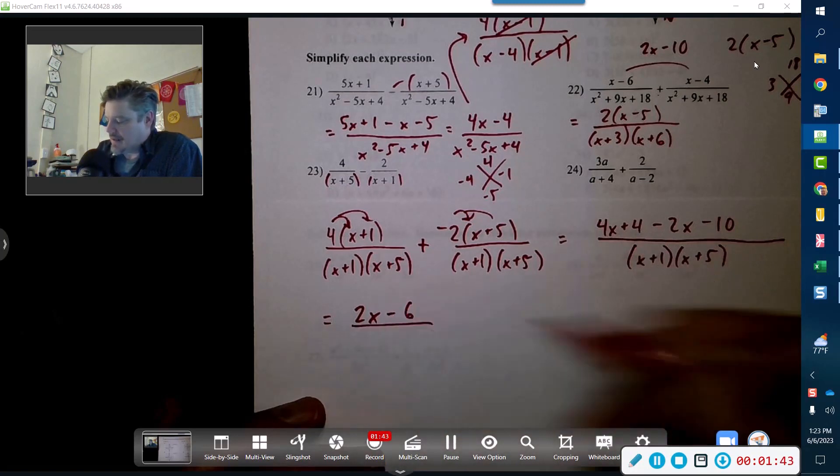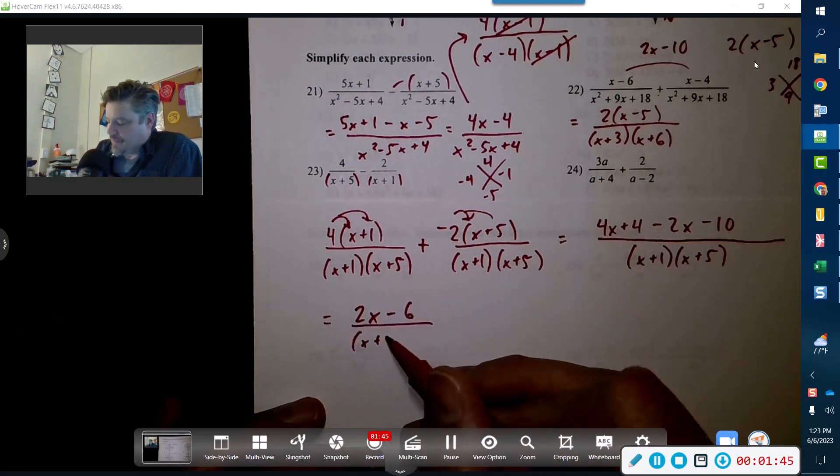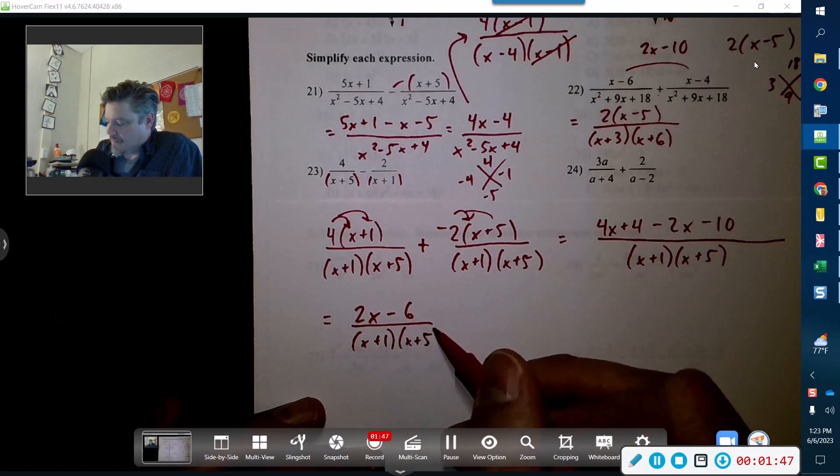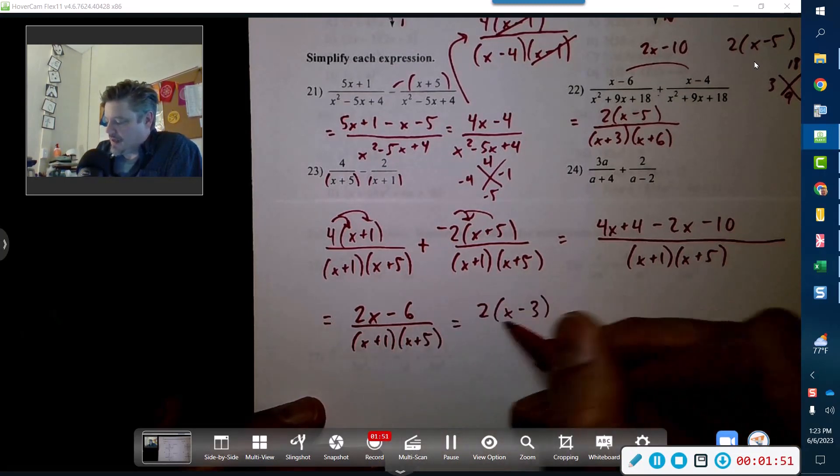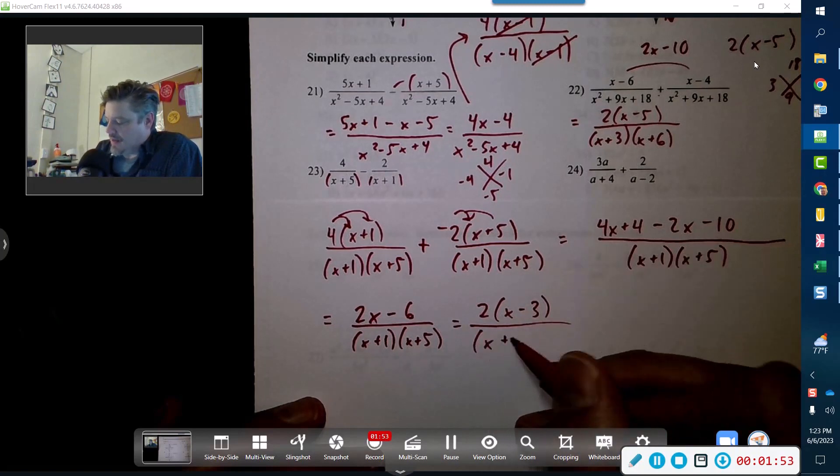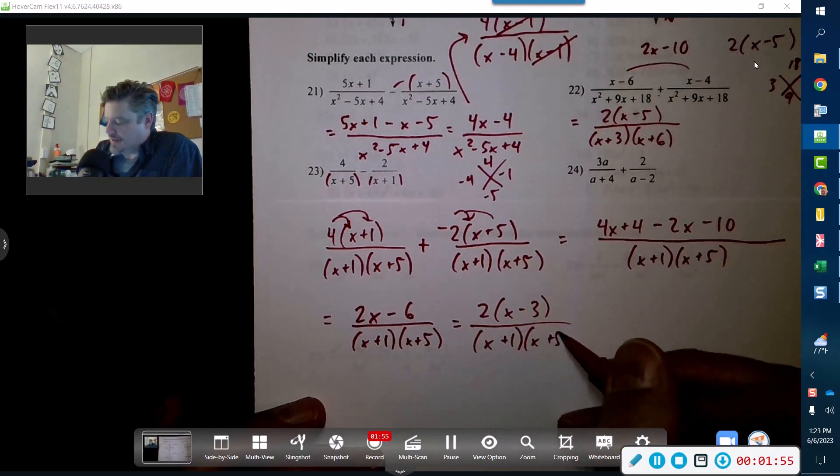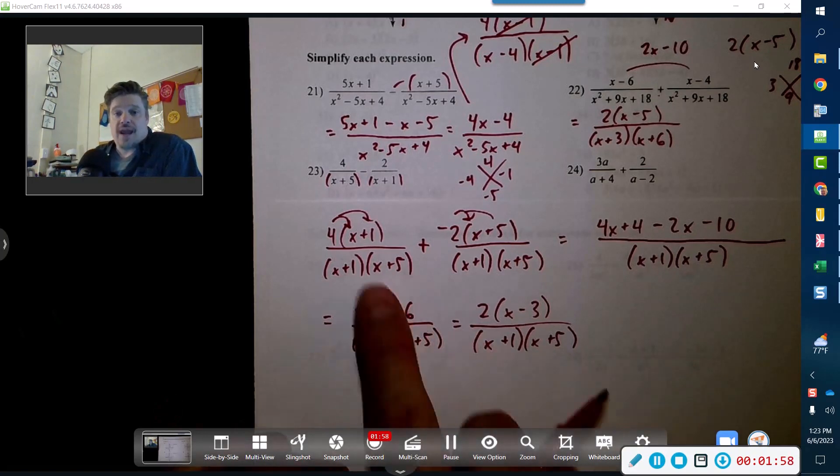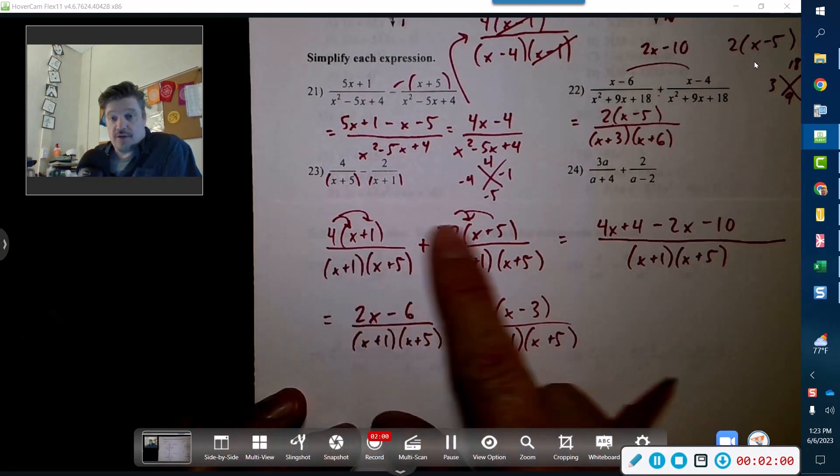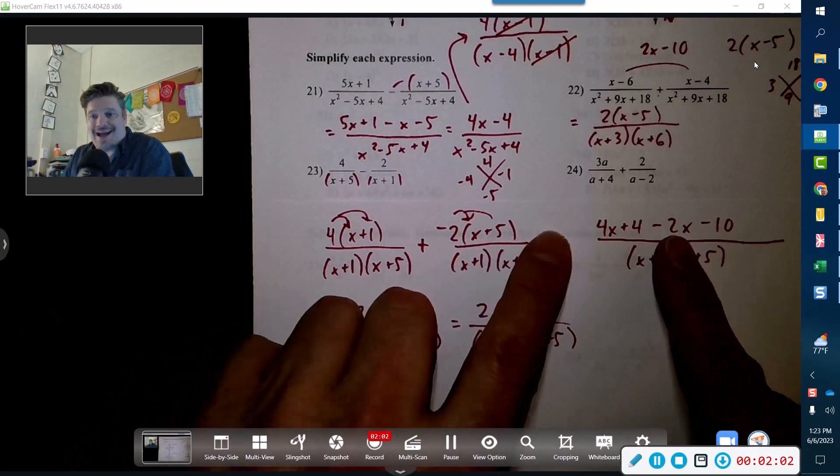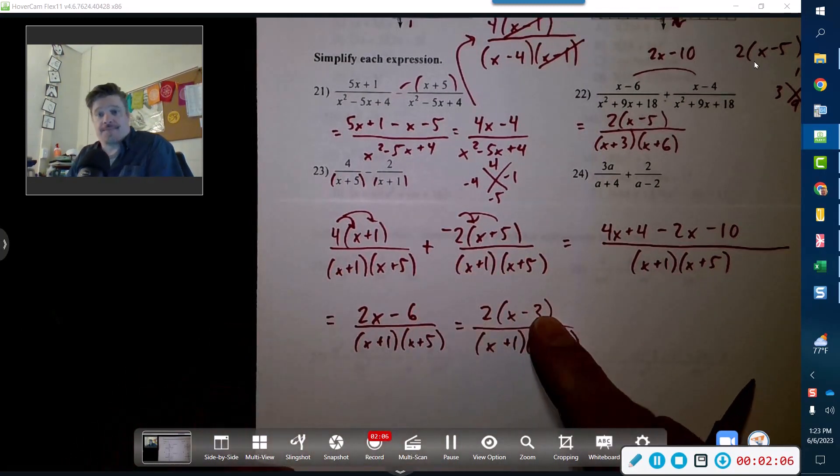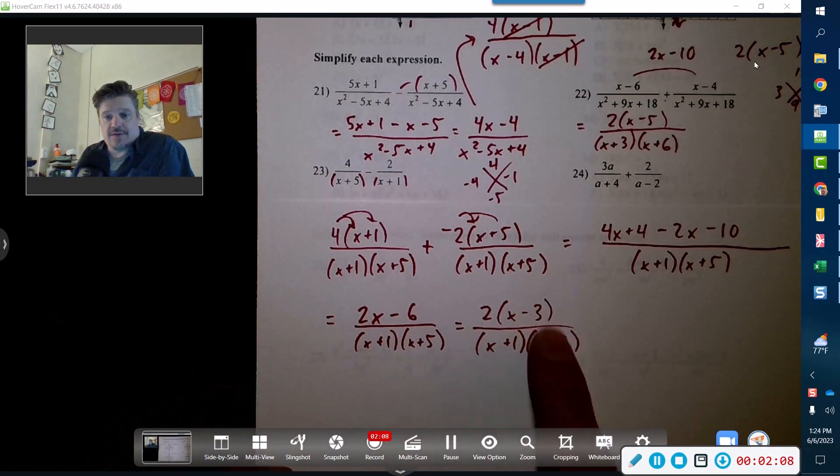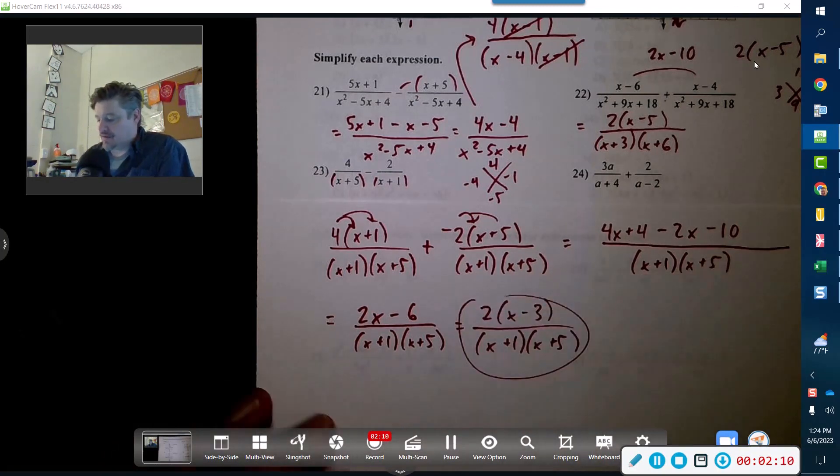If I took the 2 out, that'd be x minus 3. And in the denominator is just x plus 1, x plus 5. That's it. So we were able to distribute so that we could combine and then factor out something different. And none of those cancel out, so that is your final answer.